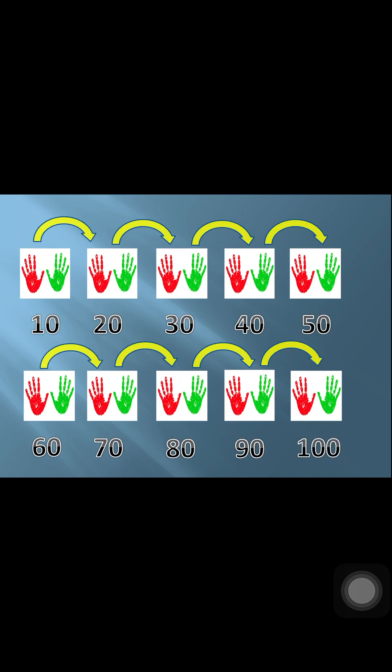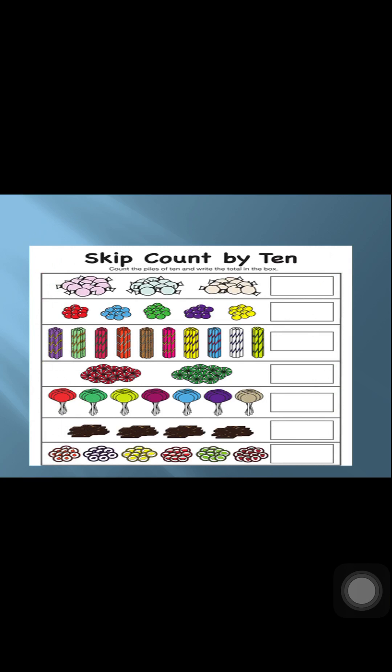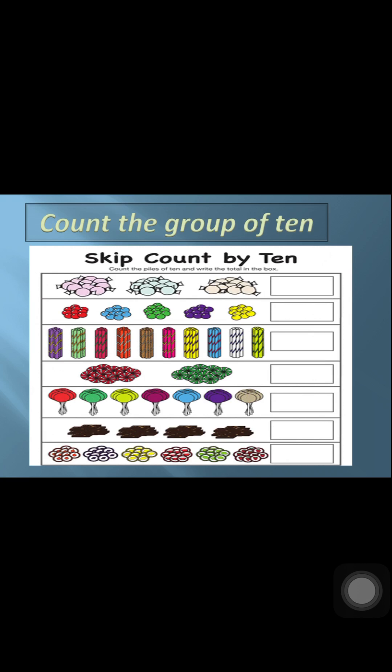Okay, shall we play another game? Look with me — skip counting by 10. Shall we count? 10, 20, 30. Again: 10, 20, 30, 40, 50. Again: 10, 20, 30, 40, 50, 60, 70, 80, 90, 100. And by this way each time.